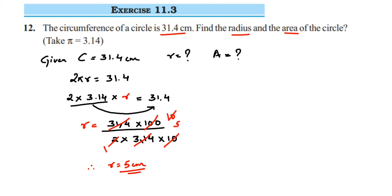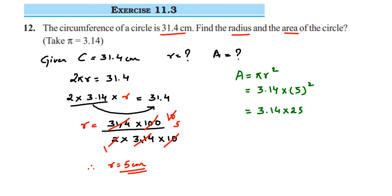Using this radius we're going to find out the area. Area of a circle is πr². Pi is 3.14, multiplied by 5 squared. Five squared means 5 into 5, which is 25. So 3.14 multiplied by 25 gives us 78.5 centimeters squared.